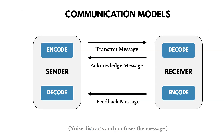Let's talk about communication models, which is an important tool and technique of planning communications management. What you need to know here is how communication happens. In communication, there's a sender and a receiver. What the sender does is encode a message and transmit it to the receiver.